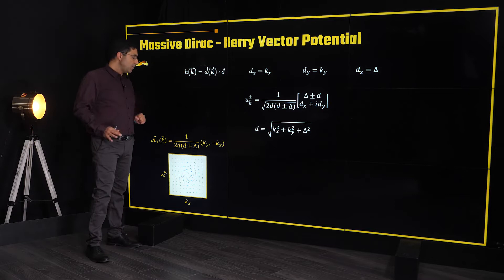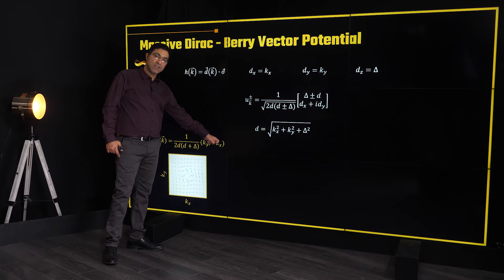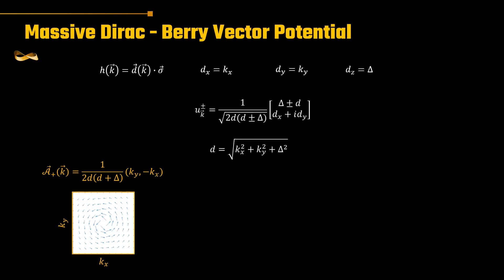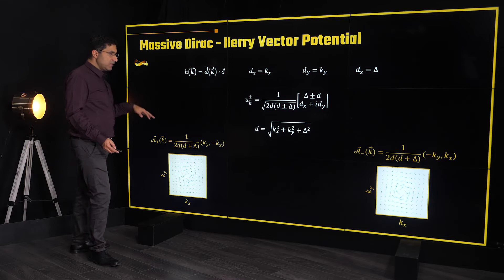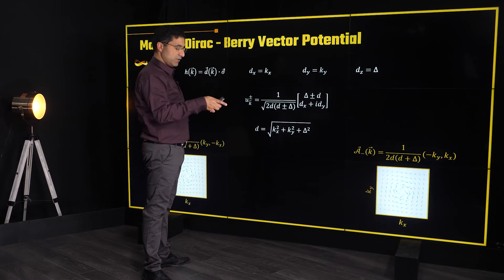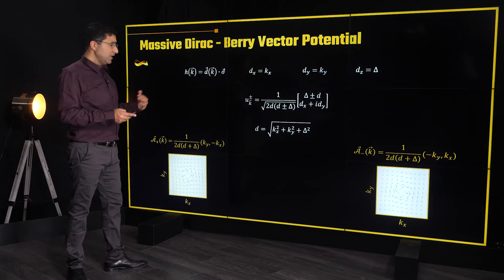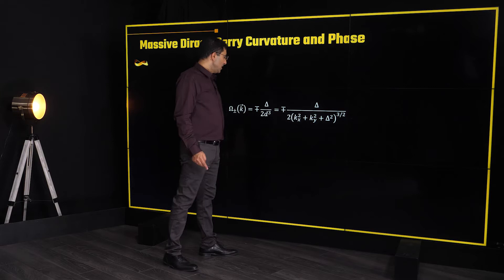At a given point in k, the x-component of A+ is ky and the y-component is −kx, so it behaves like a vector that whirls around the Dirac point, decaying as you go further from the origin. The lower band gives another whirlpool going in the opposite direction. If we take the curl of this — the local Berry curvature — we get something even simpler: an expression that is exactly what you expect from a monopole at the Dirac point.